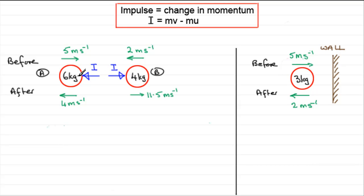How do we work out what this impulse is? Impulse is defined as the change in momentum, and it's equal to mv minus mu. Remember, momentum is mass times velocity, so it's the final momentum minus the initial momentum. You have to take care because we're dealing with vector quantities — direction matters. This is the most common mistake with these kinds of questions.